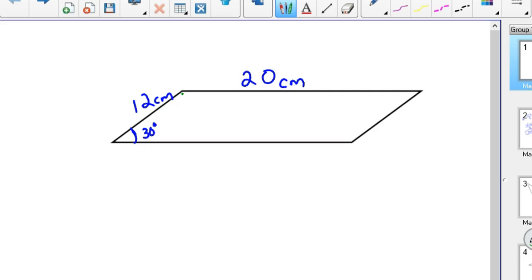Here we go. So first off, we need this height which is right here. Again, if you pull that triangle out that's on the left there, this is 12, this is 30, this is 90.